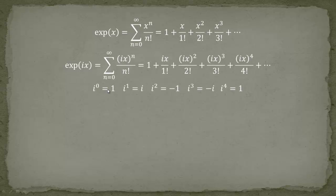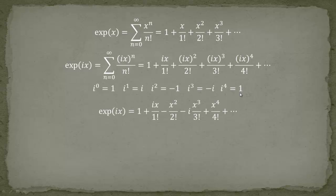We now use the powers of i: i to the zero is 1, i to the first is i, i squared is minus 1, i cubed is i squared times i which equals minus i, and i to the fourth is i squared times i squared equals minus 1 times minus 1 equals 1. Using these, we reduce the series: i squared gives minus 1, i cubed gives minus i, i to the fourth gives plus 1, and so forth.